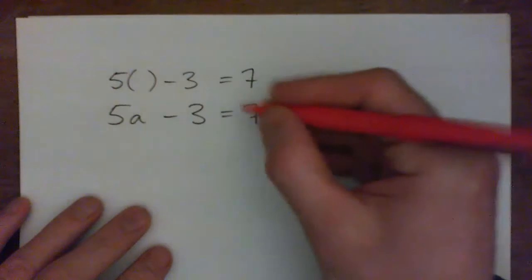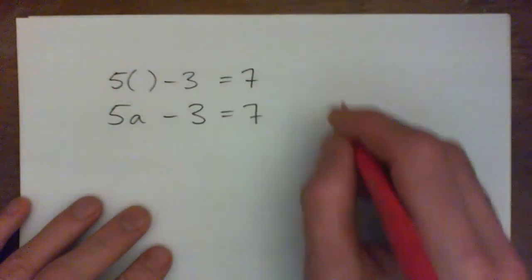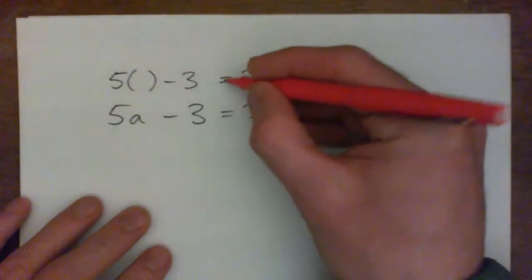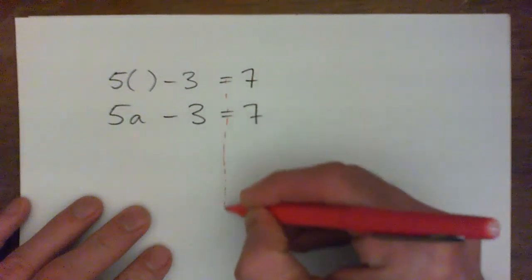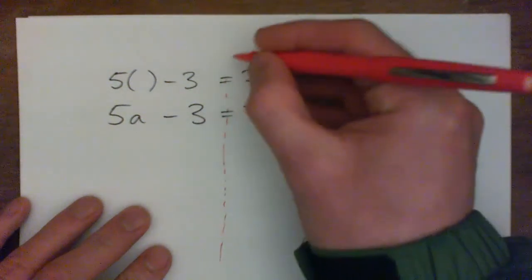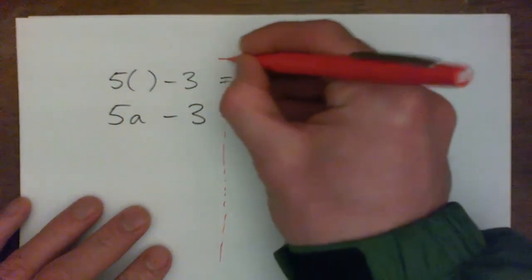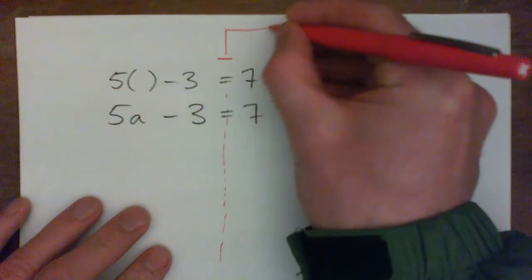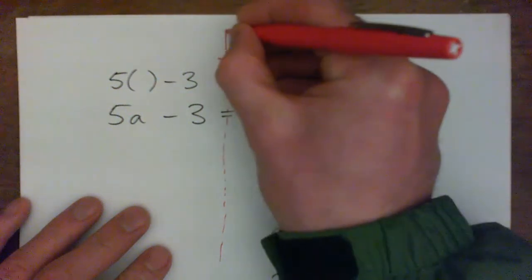What you do is you imagine that this is like a weighing scales, equal sign, and you can put your dotted line down the middle. Imagine a weighing scales here, right? So you've got a right side and a left side.